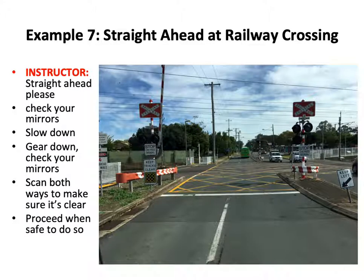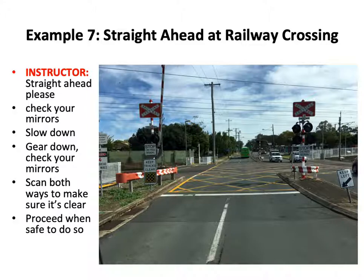Example seven: straight ahead at railway crossing. Straight ahead, please. Check your mirrors, slow down, gear down, check your mirrors again. Scan both ways to make sure it's all clear. Proceed when safe to do so.